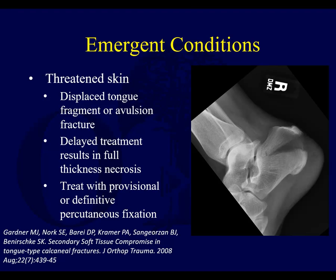There are some conditions that are emergent when treating calcaneal fractures. You've got to be really careful when you get a call about a calcaneus fracture, because the thin soft tissue envelope around the ankle and foot can lead to fractures that cause skin tenting and threaten the skin, putting it at risk for necrosis. A displaced tongue fragment or an avulsion fracture — this is an intraarticular calcaneal fracture that has displaced significantly — can cause this. You can also get a tuberosity avulsion that is not necessarily intraarticular.